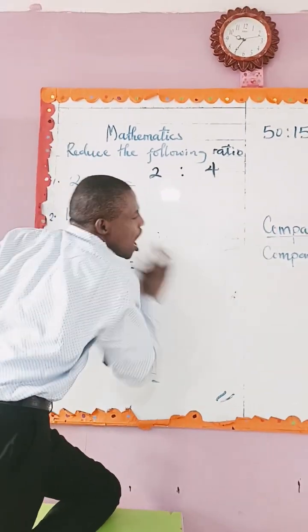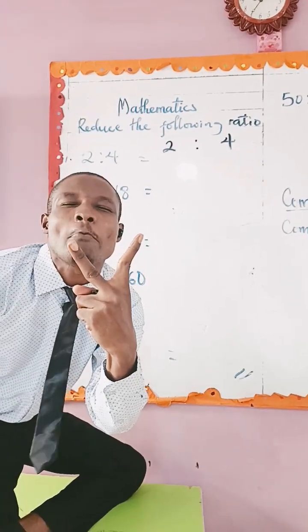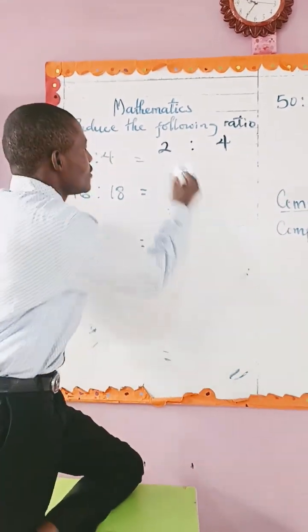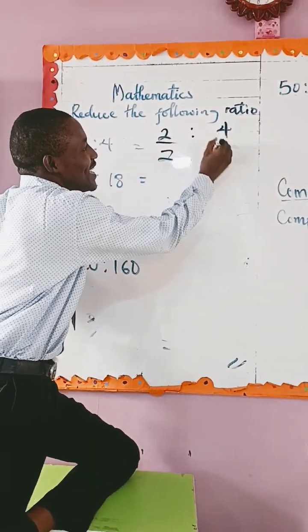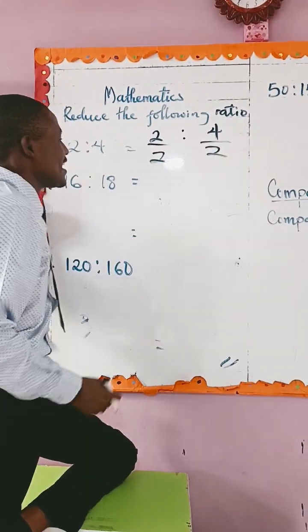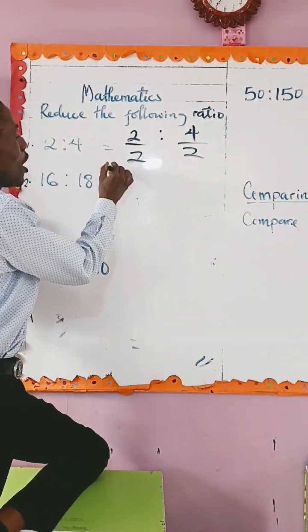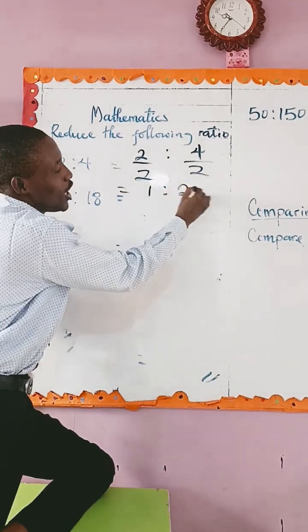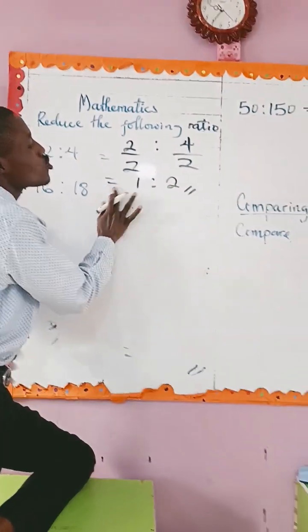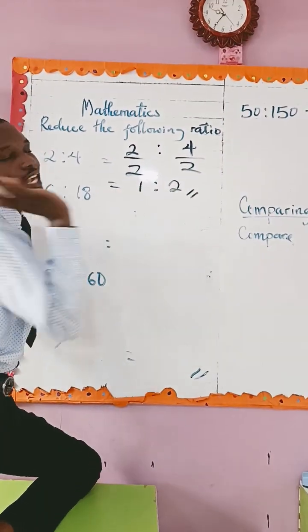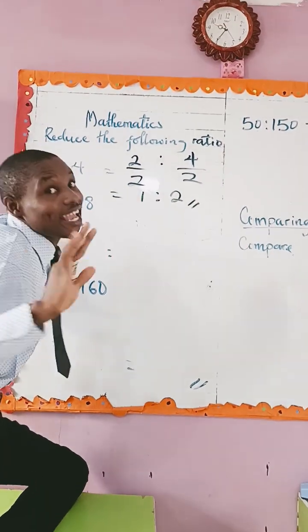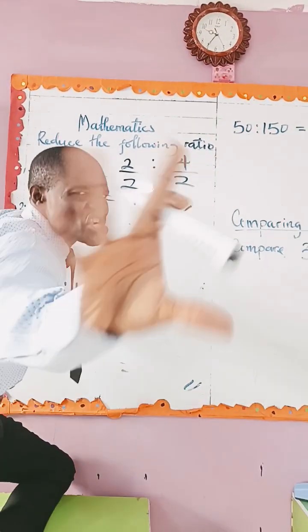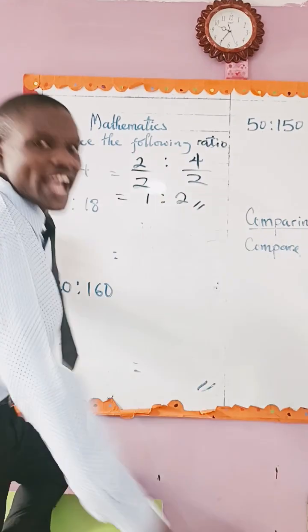Two comes to mind. Fifteen — divide both by fifteen. So what do we have? One ratio two. Super easy.